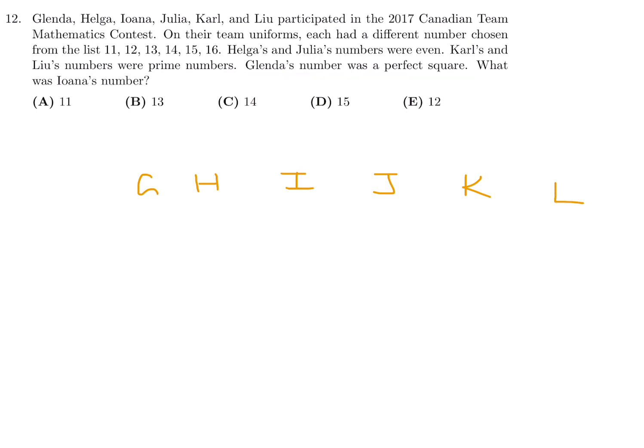Glenda's number is a perfect square, so obviously the only perfect square is 16 from this list. Carl and Lou's numbers were prime. The only prime numbers are 11 and 13. Then Helga and Julia's numbers are even, so the only even numbers left are 12 and 14. And the only number left is 15, so that must be the number for Iona. Number 12, the answer is D.